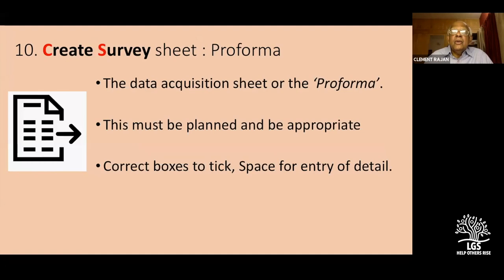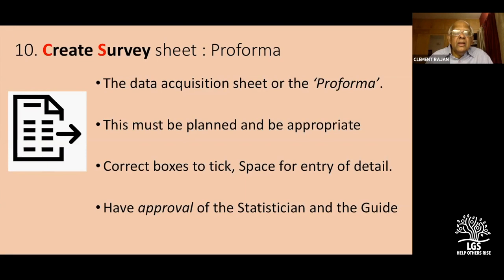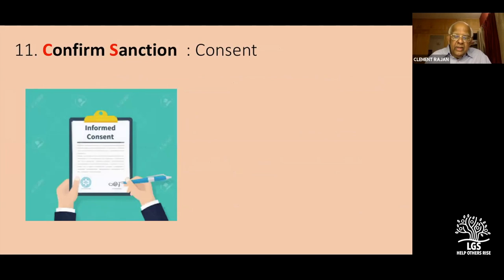Then you create your pro forma — the data sheet. It must be planned appropriately with proper boxes and spaces for entry of data. Sometimes the whole sheet is written in one page but with no boxes, no space to describe the operative procedure or findings, and that frustrates you during data collection. If you make a proper data collection sheet, the survey will be very comfortable later. Make sure the statistician reviews it and the guide agrees with it.